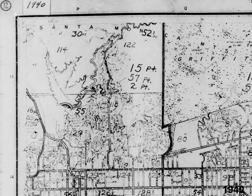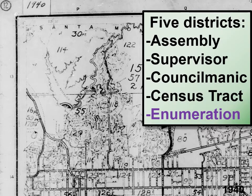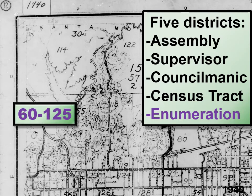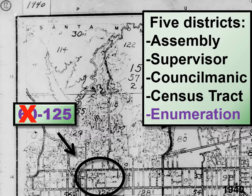Here we're looking at a 1940 ED map — this is the Hollywood Hills north of Hollywood, California. Look at all the numbers there. There are actually five districts, each having their own numbers. If we're looking for 60-125, you'd have to know that 60 doesn't show. You can see 125, to the right is 124, 123 — those are enumeration district units. 94, 93 are EDs too. 53 is a census tract. The reason there are so many numbers is that the original map had numbers in different colors, and because the film scan is in black and white, that distinction is lost on us.